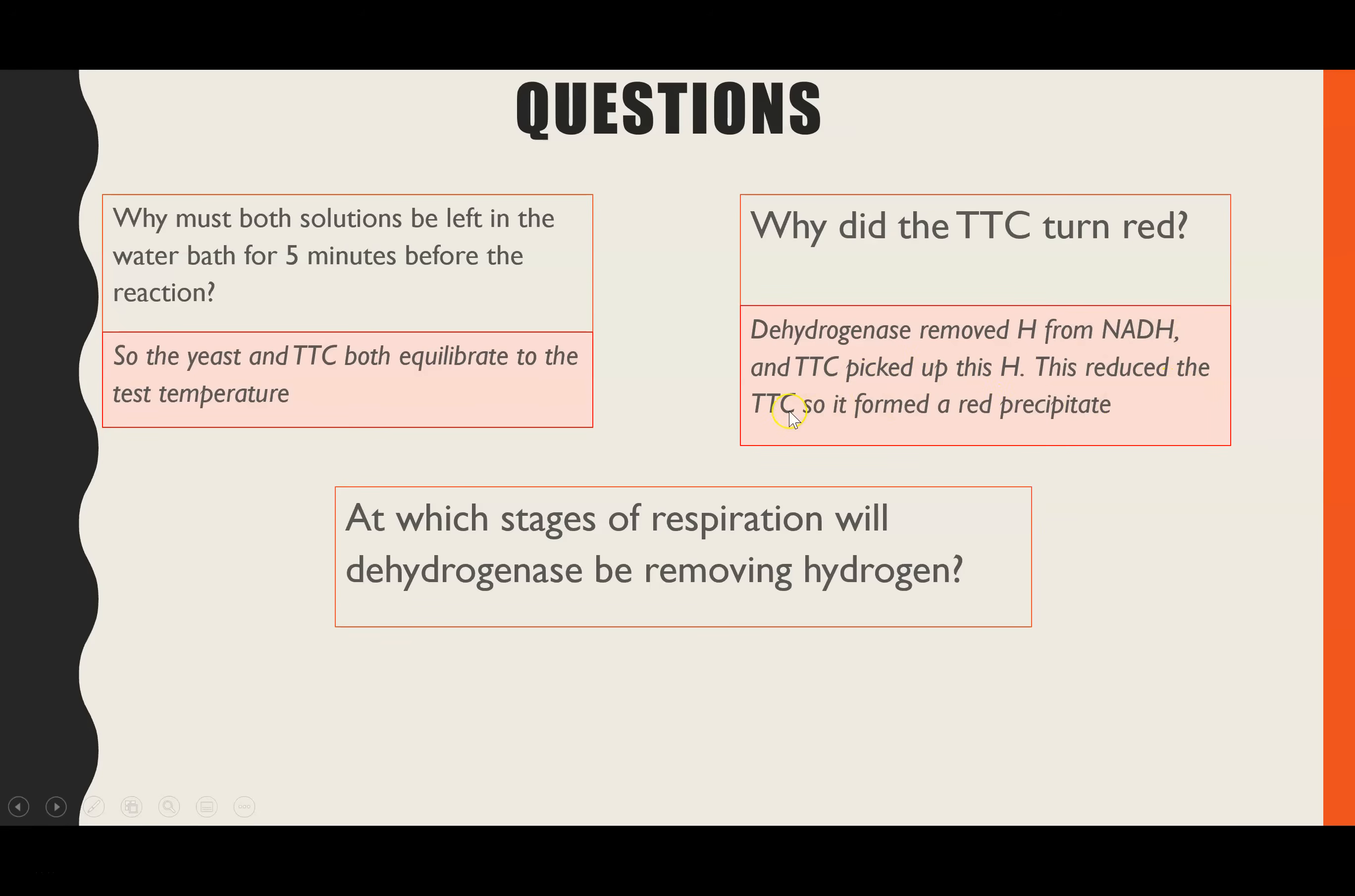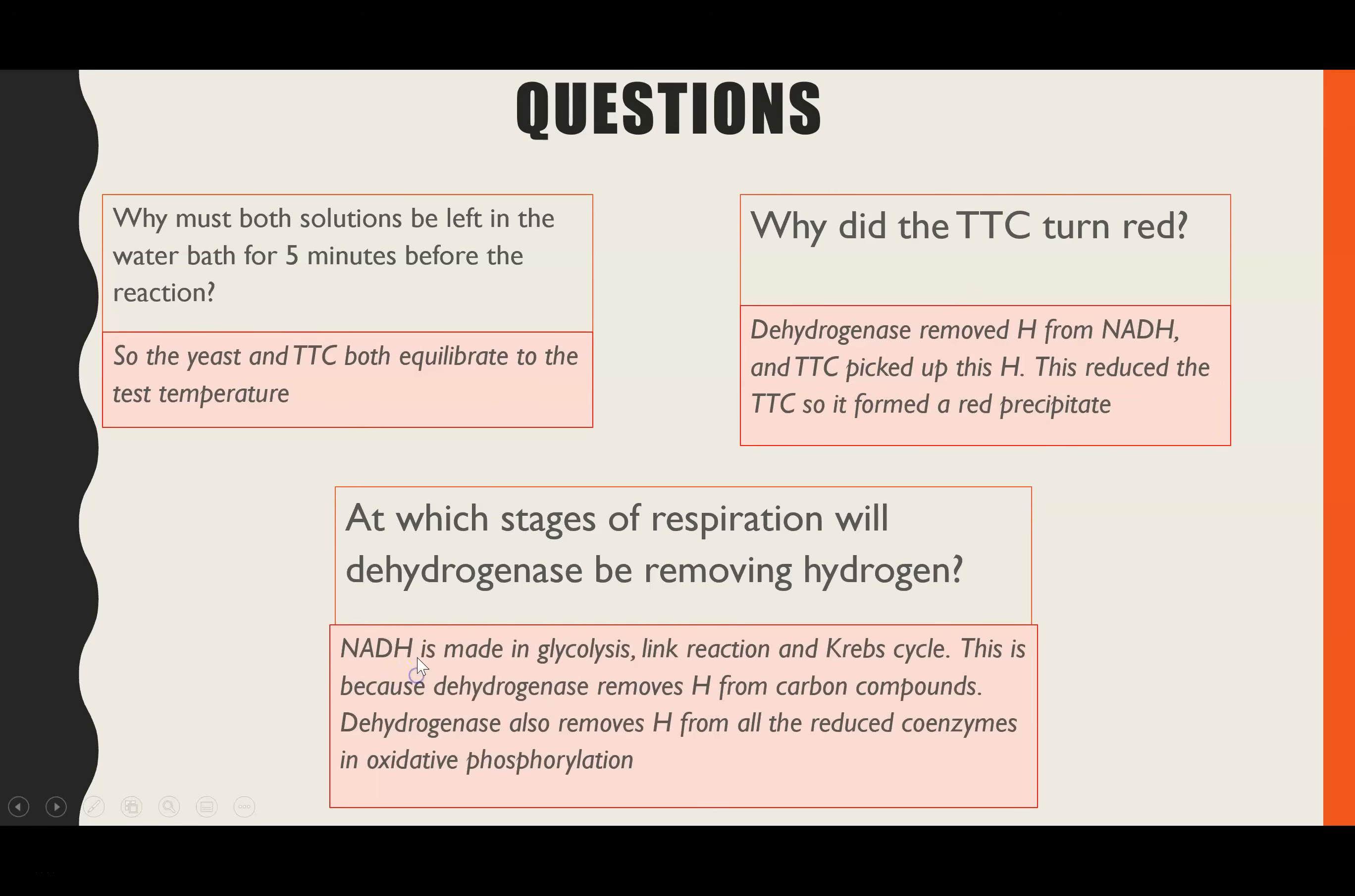That reduced the TTC, so it goes from its oxidated colourless form to its reduced red precipitate. Finally, at which state of respiration will dehydrogenase be removing hydrogen? NAD is made in glycolysis, link reaction and the Krebs cycle - all of those stages. But it's also used in oxidative phosphorylation to remove the hydrogens from all of the reduced coenzymes.